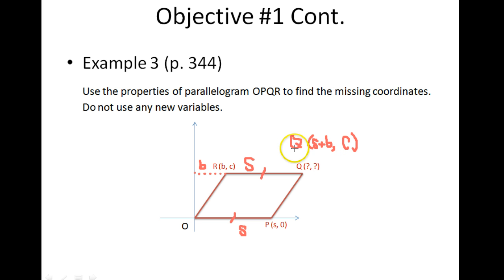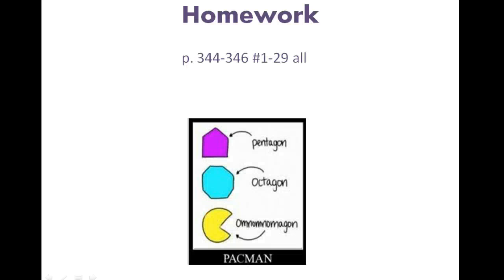So our Q, the coordinates for Q are S plus B and C. So that is all for Chapter 6, Lesson 6. Your homework for tonight is page 344 to 346, numbers 1 to 29 all. Enjoy!